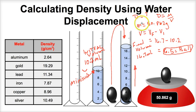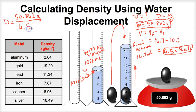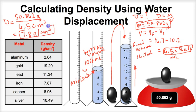We now know the mass of this ball — 50.862 grams — and we now know the volume, so we can plug it into the density formula. To get the density we take the mass, 50.862 grams, and divide by the volume of the ball, 6.5 cubic centimeters. Using the correct number of sig figs we should end up with 7.8 grams per cubic centimeter.